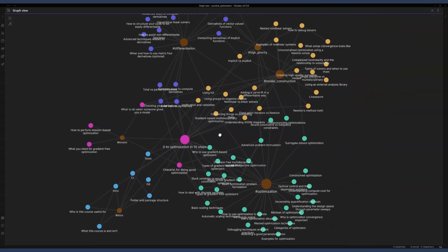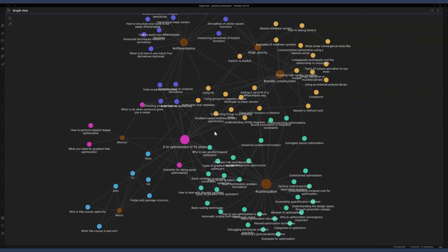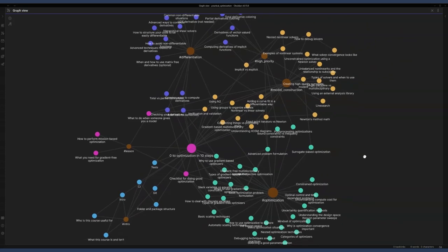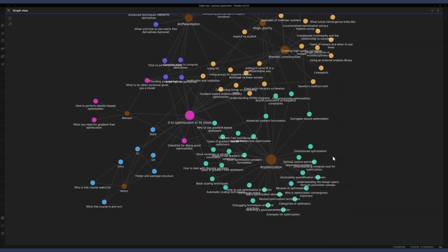One thing I really want to drive home during this course is how they are linked and why we need to care about what they mean. This view might be helpful for you, it might not be helpful because it looks pretty busy and some of the text is overlapping, but for me it's helpful to say, okay, if I know about implicit versus explicit components, I need to care about computing the derivatives of implicit functions right up here.